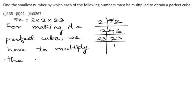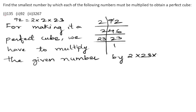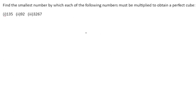We need to multiply the given number by one more 2 and two more 23s — that is 23 × 23. So 23 × 23 = 529, and 529 × 2 = 1058. Now let us take the third bit: 3267.